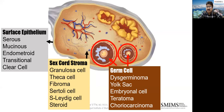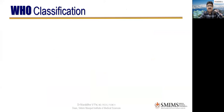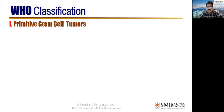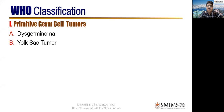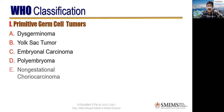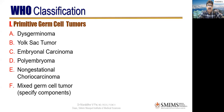Currently, the WHO classification has changed from the embryonal/extra-embryonal division. Now WHO says number one is primitive germ cell tumors — not differentiated into specialized cells like ectoderm, endoderm, or mesoderm. Number one is dysgerminoma. Then comes yolk sac tumor. Then embryonal carcinoma, the most virulent variety. Then polyembryoma, non-gestational choriocarcinoma — going up to the villi stage but not beyond. Mixed germ cell tumors with specific components, and the diffuse embryoma variant.